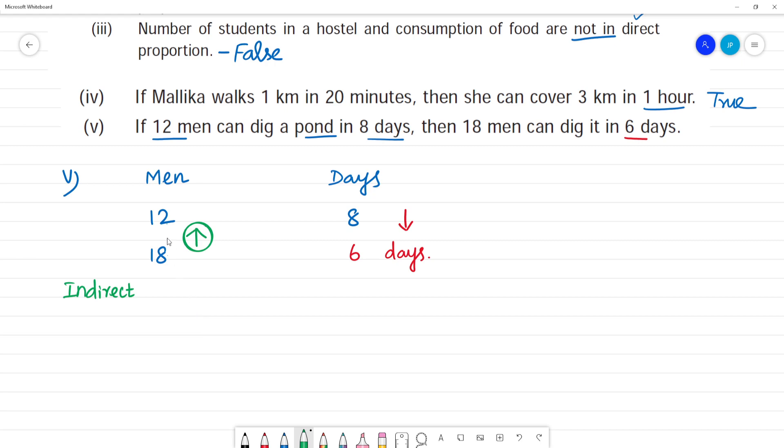This is the formula. See, for example, this is x1, this is x2, this is y1, this is y2. So x1 multiplied by y1 is equal to x2 multiplied by y2.